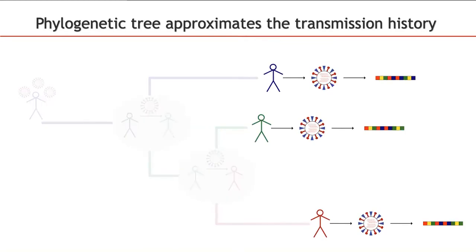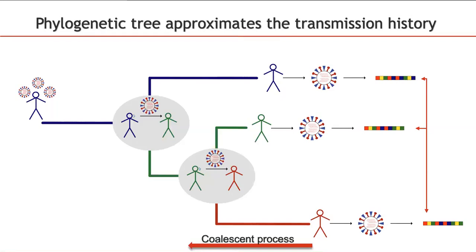In practice, this is usually where we start — we observe infected individuals and collect viral sequencing data from them. Since viruses typically accumulate mutations rapidly, we can construct their phylogenetic tree using a coalescent model, starting at the samples and going backwards in time. Coalescence of two viral lineages can be viewed as an approximation of the transmission event shown here.